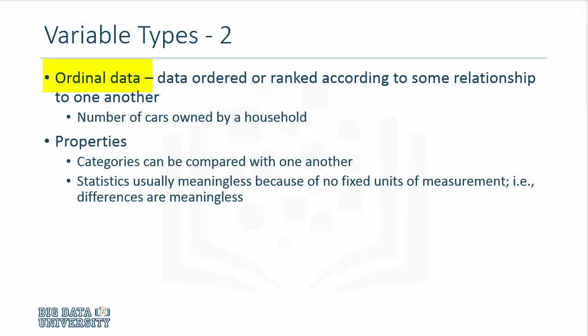A particular type of categorical variable is ordinal data, where data are ranked or ordered in some particular fashion. For instance, the number of cars owned by a household: a household may have zero cars, one car, two cars, three or more cars. That essentially is ordinal data where zero represents zero and cannot be coded as one, and one cannot be coded as zero. The order in which the variable has been recorded matters. Categories can be compared with one another, but you still cannot use regular statistics. The differences are also meaningless in this particular case.